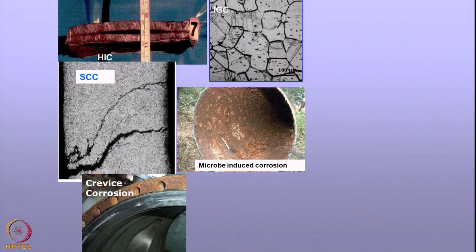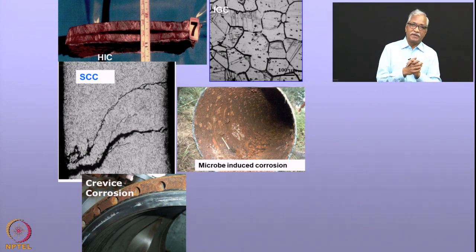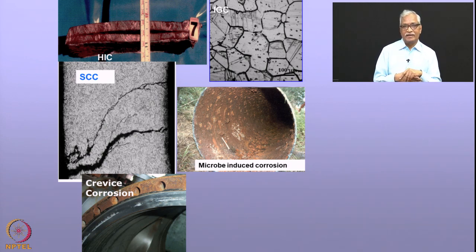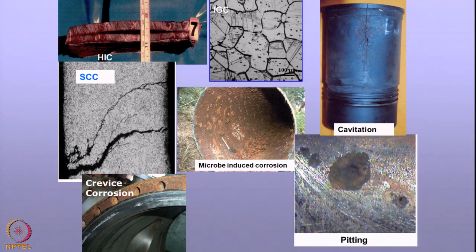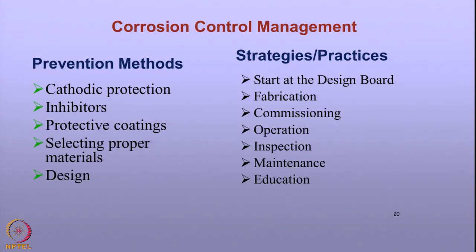It can be microbial corrosion — microbes present in the environment can cause corrosion. We will see microbial corrosion in detail because it is one of the most important damaging mechanisms for underground pipelines and storage tanks. Cavitation damage can happen in pumping systems with impellers — due to hydrodynamic pressure differences, bubbles form and implode, transferring mechanical damage and leading to cracking of structures. Pitting corrosion can happen on stainless steels due to chloride attack.